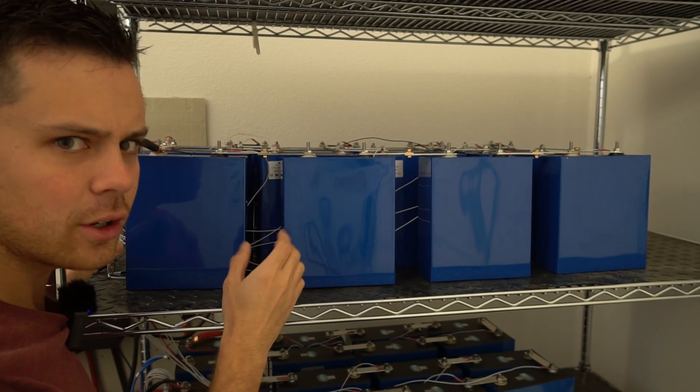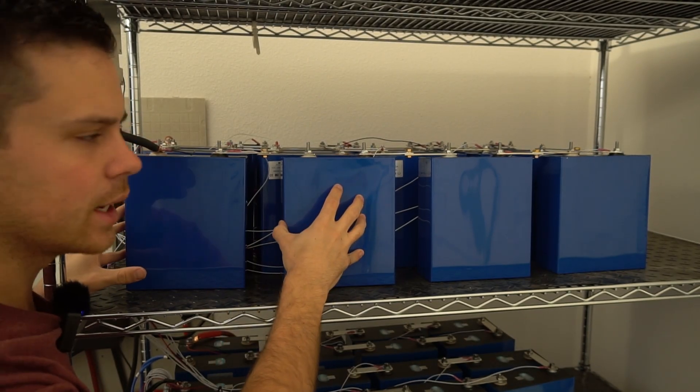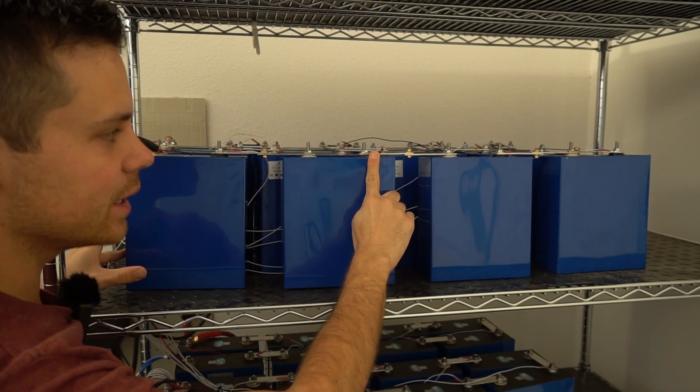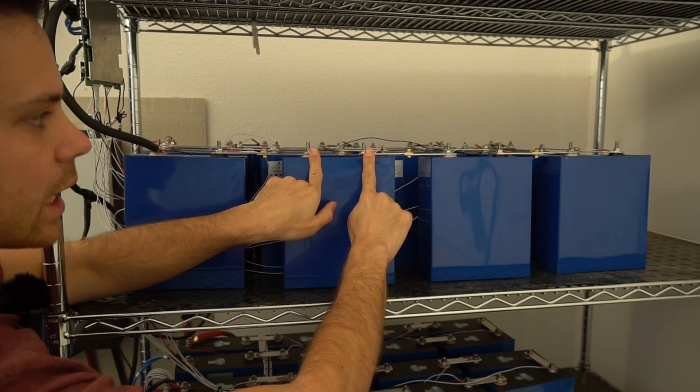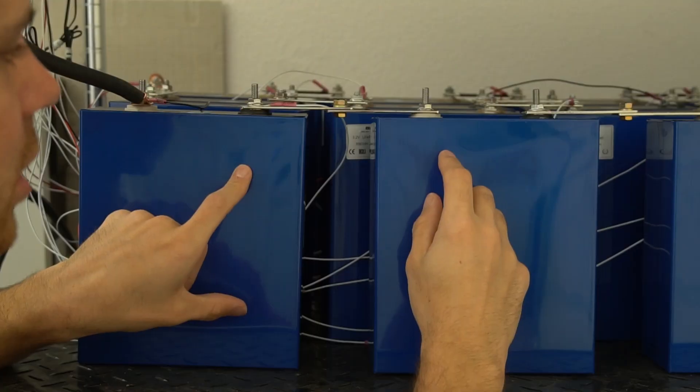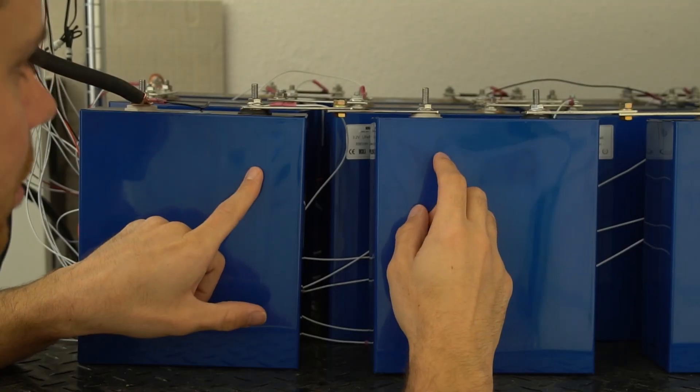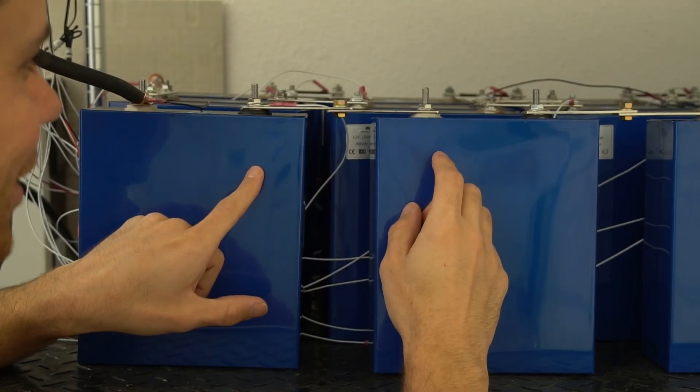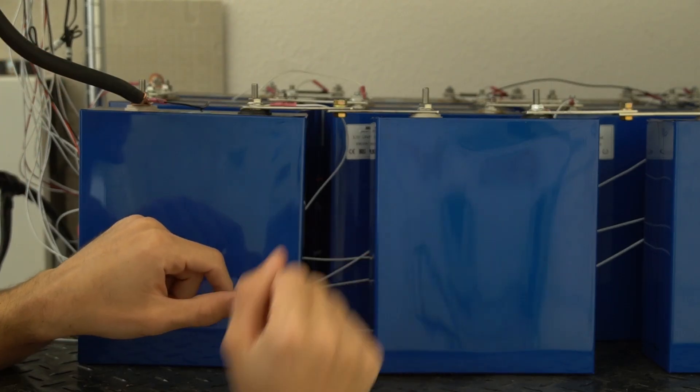Last night I finished up this battery and I noticed that these Eve cells from Current Connected, the terminal placement is different than the other ones. They're actually closer together, so I needed longer bus bars. Instead of making my own, which I'm tired of doing at this point in my life, I just put two of them together and it works great.